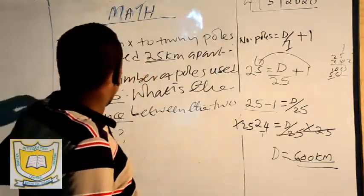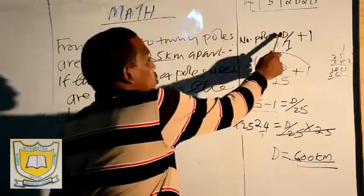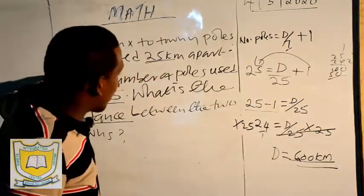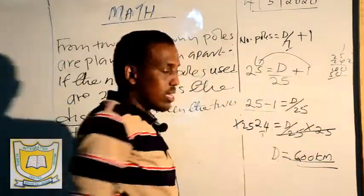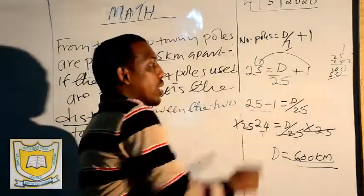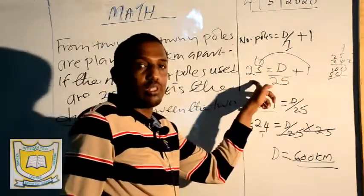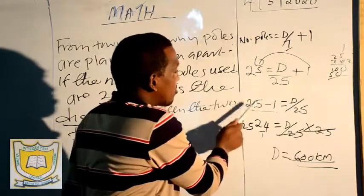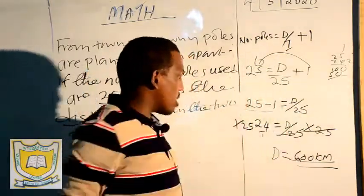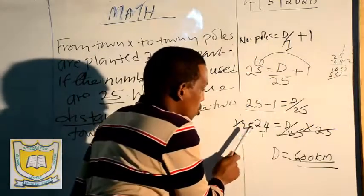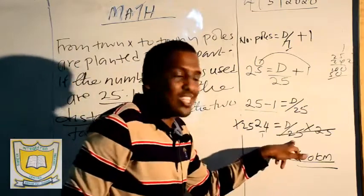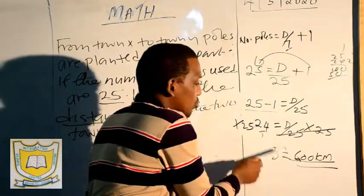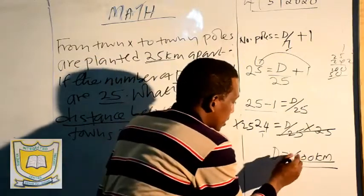Number of balls we have is 25, because they said there are 25 balls. That equals distance over interval, which is 25 meters apart, plus 1. We collect like terms — the 1 moves to the other side and becomes minus. So 25 minus 1 equals D over 25, which is 24 equals D over 25. Multiply both sides by 25, so D equals 25 times 24, giving 600 kilometers.